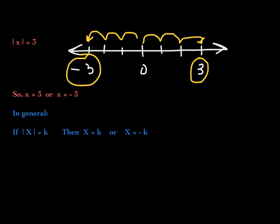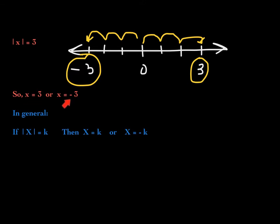The absolute value of a number is its distance, and distance cannot be negative in this context, so k is guaranteed to be positive. If you have an equation where the absolute value of some expression equals k, then either that algebraic expression equals k or it equals the opposite of k. That is the approach we will take when solving absolute value equations.